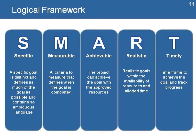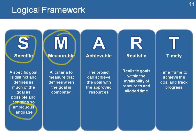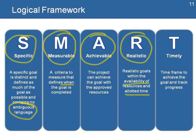Here is more information on each one of those elements. By specific, we mean that the goal is distinct, defined as clearly as possible, and contains no ambiguous language. Measurable means there is a criteria to measure that defines when the goal is completed. Achievable means the project can achieve the goal with approved resources — it's not an impossible dream. Realistic means the goals are within the availability of resources and the allotted time. And timely means there is a timeframe to achieve the goal and track progress.